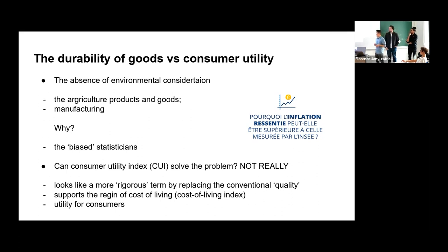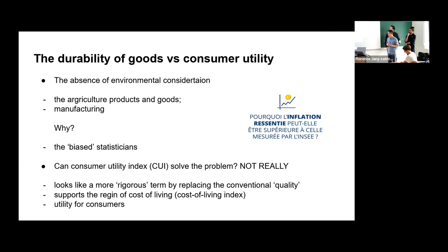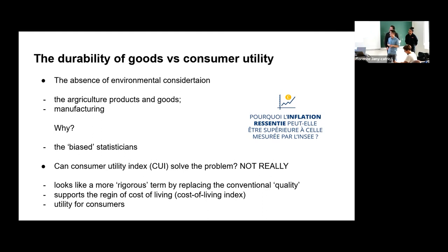Some economists propose the Consumer Utility Index (CUI) to solve the problem, claiming success. On one hand, CUI seems more concrete by replacing the vague quality term, and it relates to the cost-of-living index by incorporating consumer utility. On the other hand, it remains within the mainstream economic regime, and as the professor noted in the paper, it has little to do with sustainability and well-being. By the end of the day, there is still no perfect measurement of the price index.